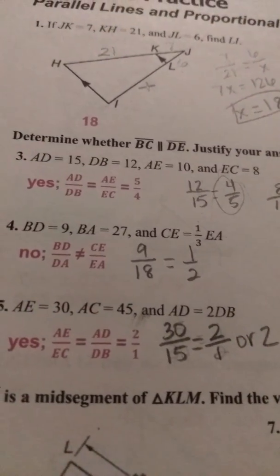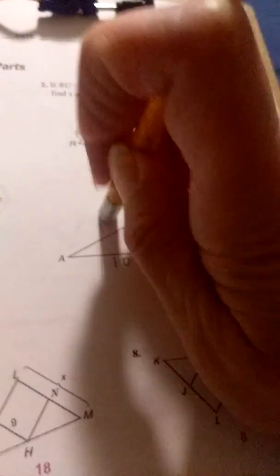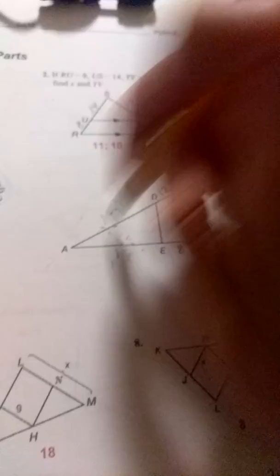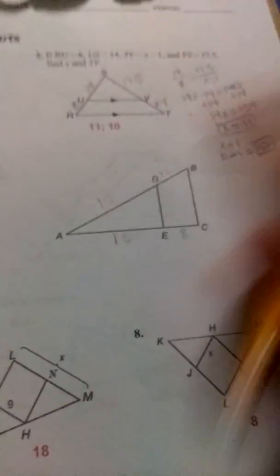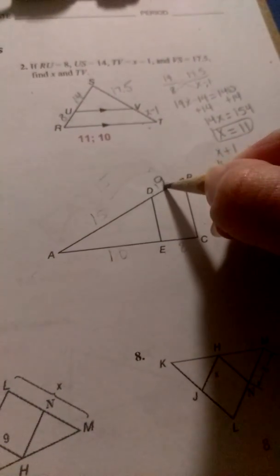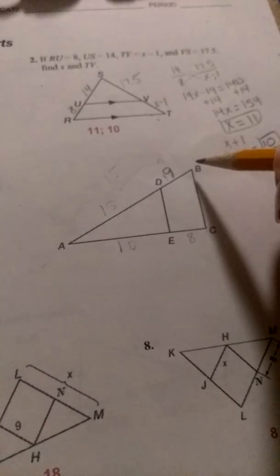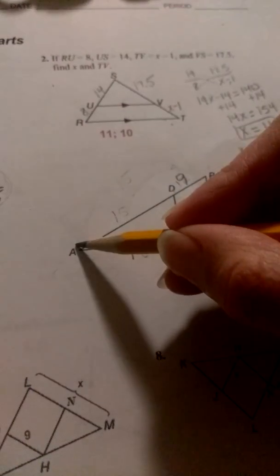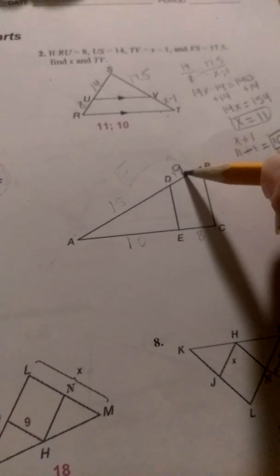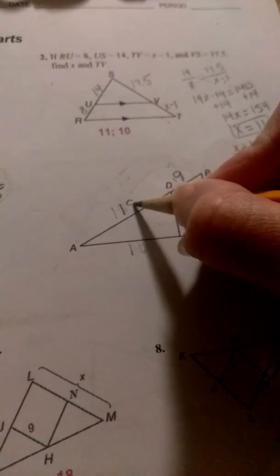On number 4, again, we want to label. I'm going to go ahead and erase this information, because that's from the first problem, and we don't want to get confused. So we're given that BD is equal to 9, so I'm going to replace that there. We know that B to A is equal to 27, so if we just want to find AD, 27 minus 9 gives us 18.